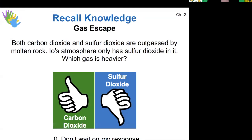All right. So if both of those gases were added to a secondary atmosphere of Io by molten rock through its volcanism, but now it only has sulfur dioxide in it, what's heavier, carbon dioxide or sulfur dioxide?